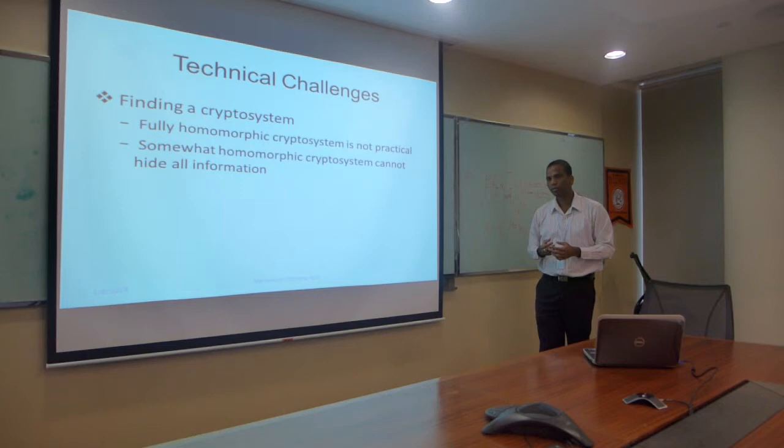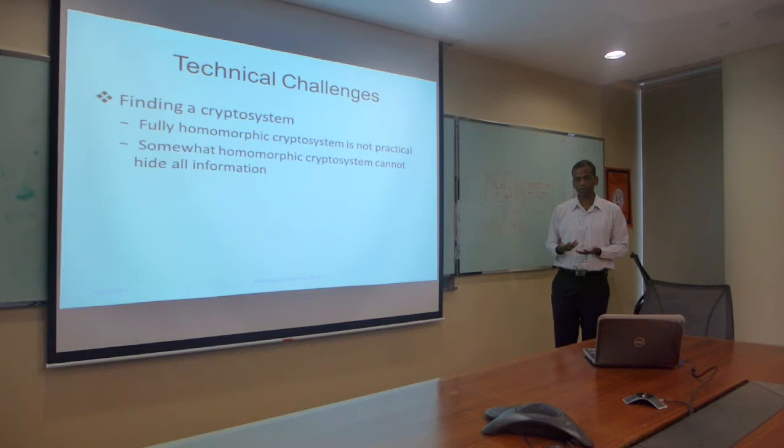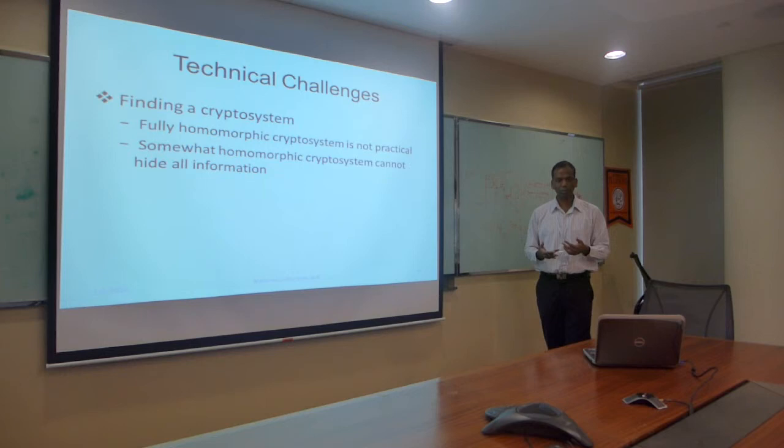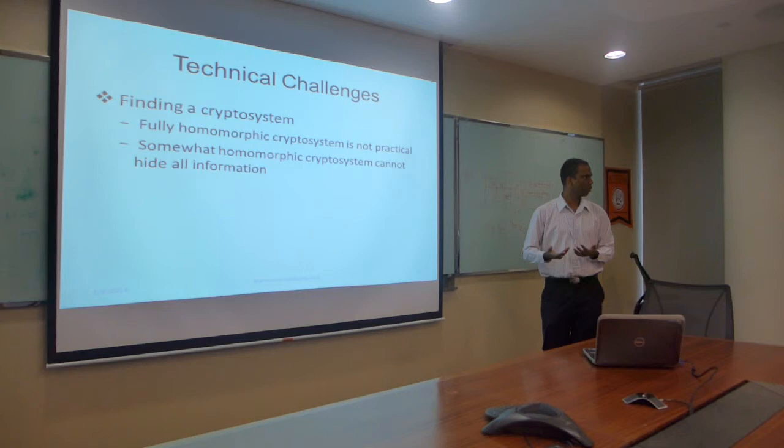Yes, that's right. But as you know, we have a fully homomorphic cryptosystem now, but it's only theoretically workable — it's not practical, it requires nearly supercomputer-level resources. And there are somewhat homomorphic cryptosystems, which can support certain operations like addition and scalar multiplication, but may not support all operations needed for image processing. So that's the problem.